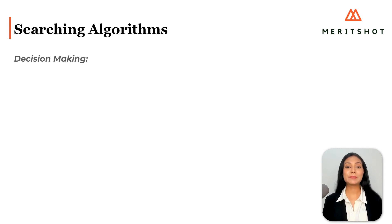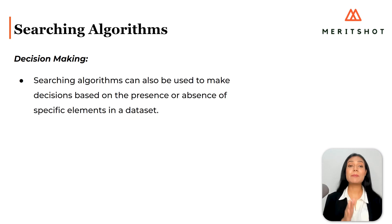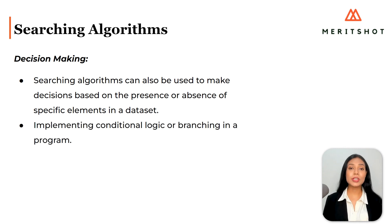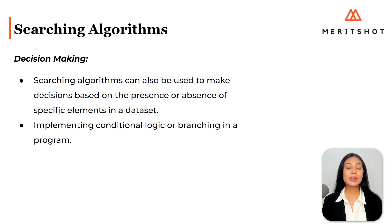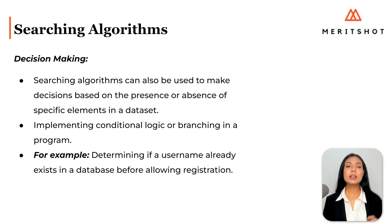4. Decision Making. Searching algorithms can also be used to make decisions based on the presence or absence of specific elements in a data set. This can be beneficial for implementing conditional logic or branching in a program. For instance, determining if a username already exists in a database before allowing registration.